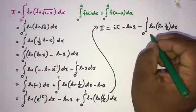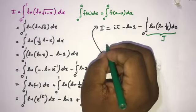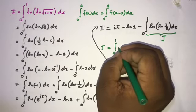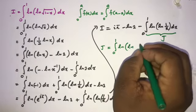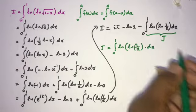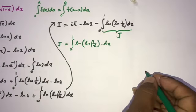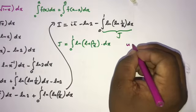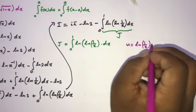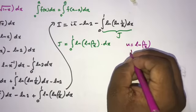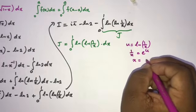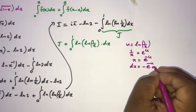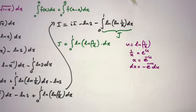Let's call this remaining integral J. So J equals the integral from 0 to 1 of ln(ln(1/x)) dx. To evaluate J, we use the substitution u = ln(1/x). Then 1/x = e^u, so x = e^(−u), and differentiating gives dx = −e^(−u) du.